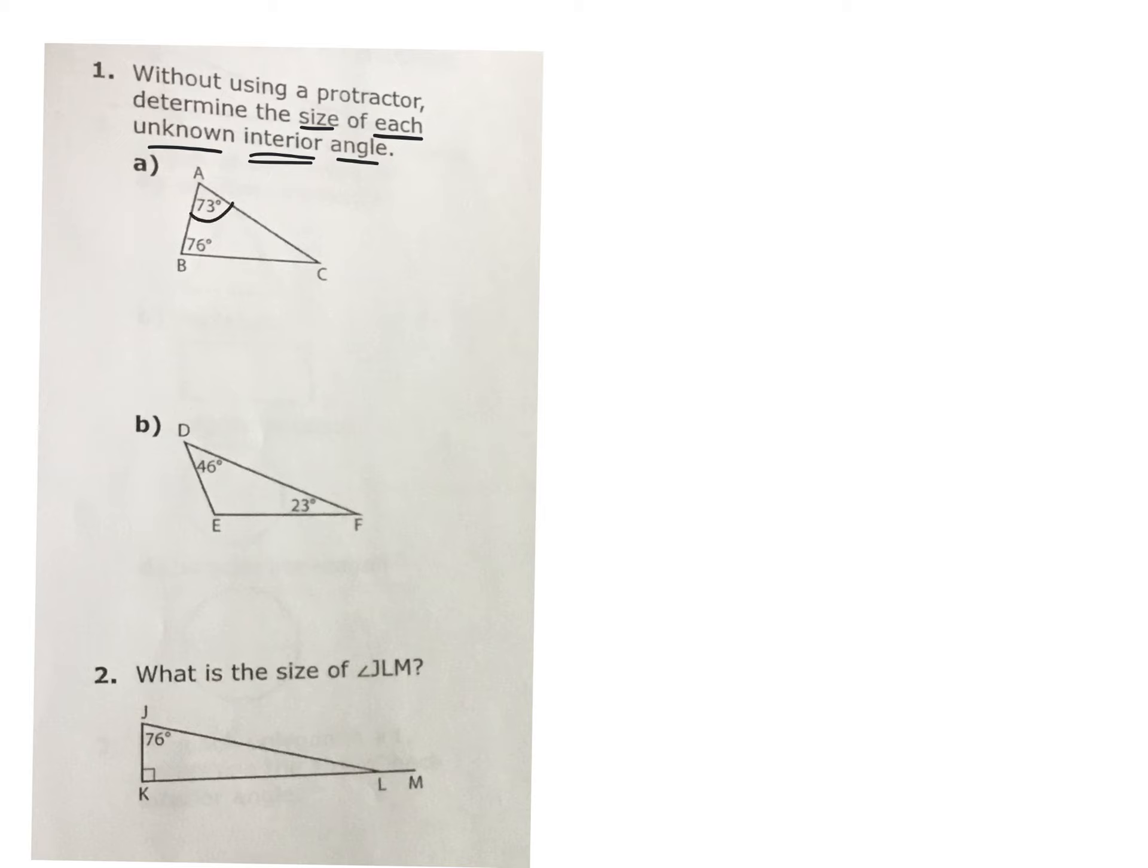I'm given angle A is 73 degrees, angle B is 76, and we have to figure out angle C. What do you recall from what you learned the other day? If we add up all of the interior angles in a triangle, what do they add up to? 180 degrees. So if I know A and B, what would I do to figure out C?